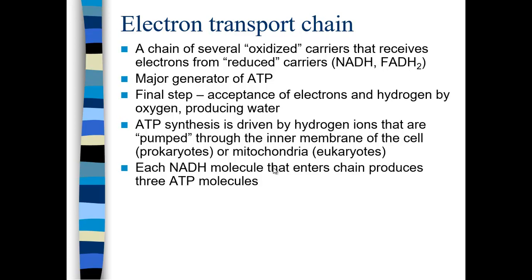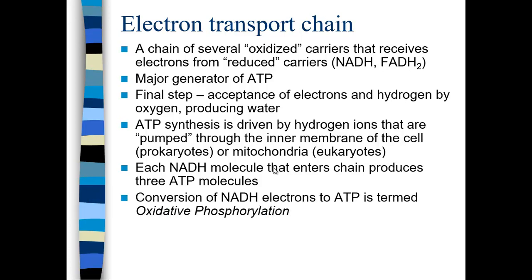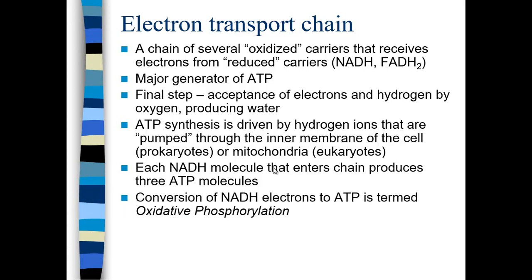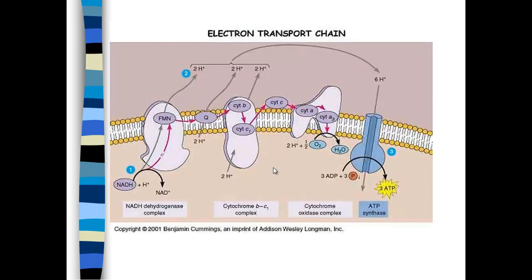Each NADH molecule that enters the electron transport chain produces three ATPs. The conversion of NADH and FADH2 electrons to ATP is termed oxidative phosphorylation — the whole process of the electron transport chain is also called oxidative phosphorylation. ADP is getting a phosphate, so it's being phosphorylated, and the electron carriers NADH and FADH2 are being oxidized.